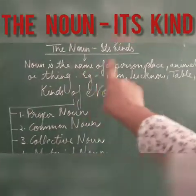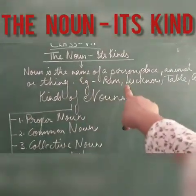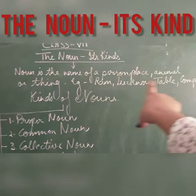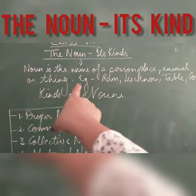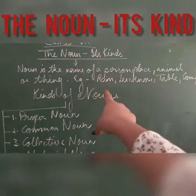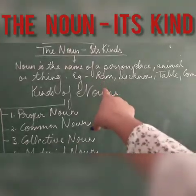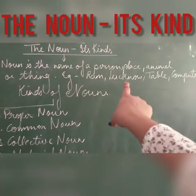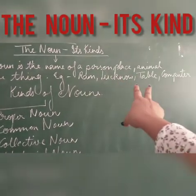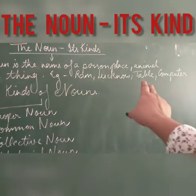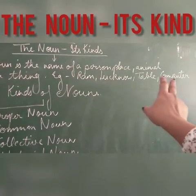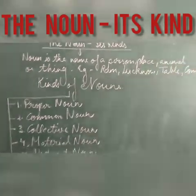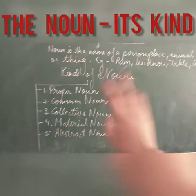Noun is the name of a person, name of a place, name of an animal, name of a thing. For example, Ram is the name of a person, Lucknow is the name of a place, table is the name of a thing, computer is the name of a thing. So these are the examples of noun.